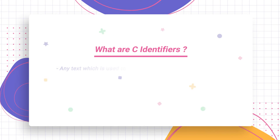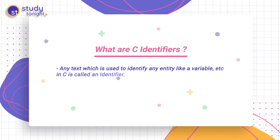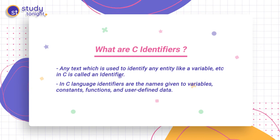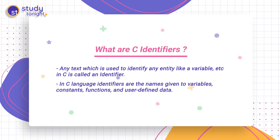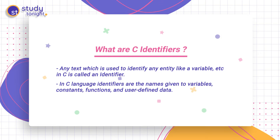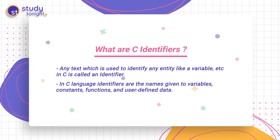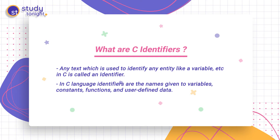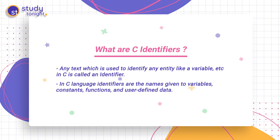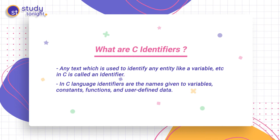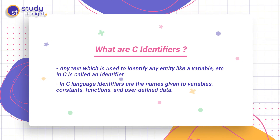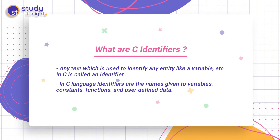What are C identifiers? Any text which is used to identify any entity — it can be a variable, constant, function, or any other element — is called an identifier. In C language, identifiers are the names given to variables, constants, functions, and user-defined data. These identifiers are defined against a set of rules, which we will now discuss.